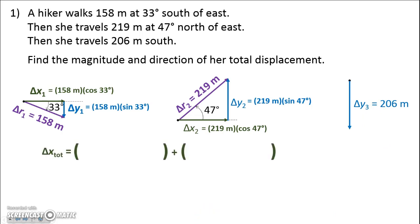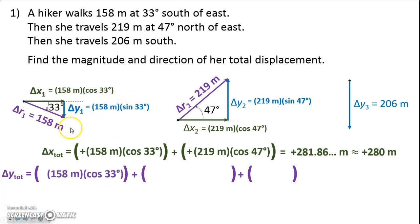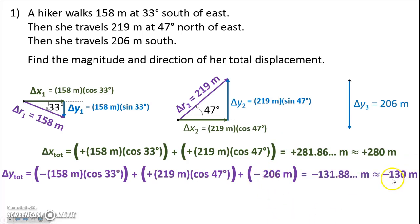Now we are ready to solve. We add up all of the delta X's — delta X1 and delta X2. The first is 158 cosine 33, and that points to the right so we make it positive. The second is 219 cosine 47, also rightward, so we make it positive too. This comes out to about 280 meters. We do the same thing for delta Y total — we have three vertical arrows to add. There's 158 sine 33, which points down, so it's negative. Then 219 sine 47, which points up, so it's positive. And lastly 206, which points down, so we make that negative. Adding this up in the calculator gives about negative 130 meters.